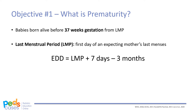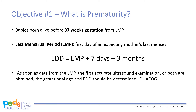It is important to note, however, that according to the American College of Obstetricians and Gynecologists, determining gestational age should be based on the best obstetric estimate rather than the LMP alone. This primarily involves the first trimester ultrasound.